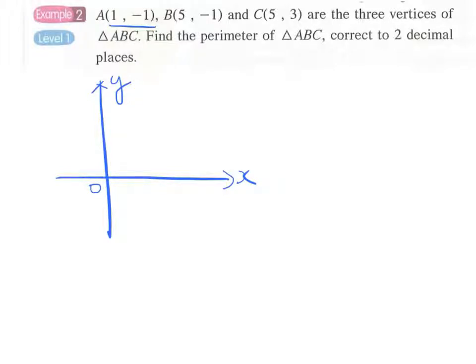Point A is (1,-1) and point B is (5,-1). These two points have the same y-coordinates, so they should be on the same horizontal line. Point A will be somewhere like this, (1,-1), and then point B is (5,-1).